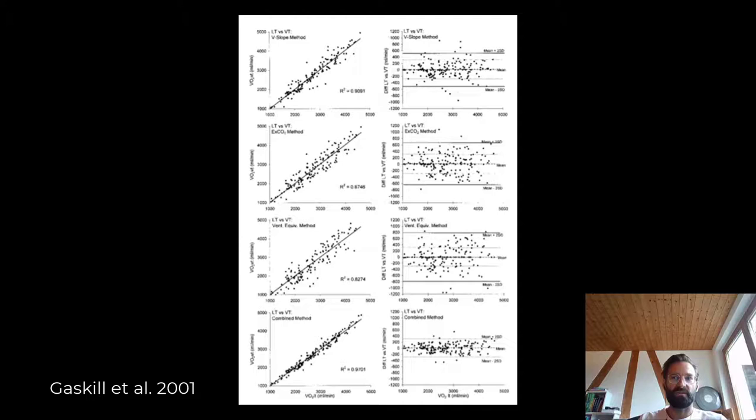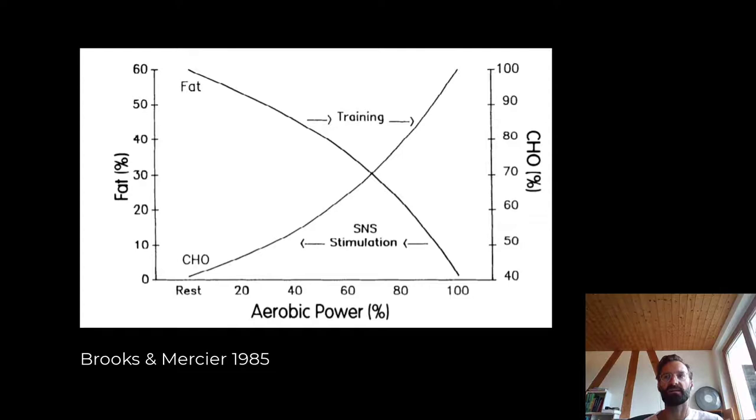Nonetheless, how does the ventilatory threshold and lactate threshold, which I'm going to say is fairly similar, how does that relate to fat max? Generally speaking, fat max is around ventilatory threshold one or below, or better said at lactate threshold one or below.